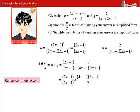Cancelling out the common factor of 2x plus 1 gives a simplified expression of half of the product of 2x minus 1 and 4x minus 1.